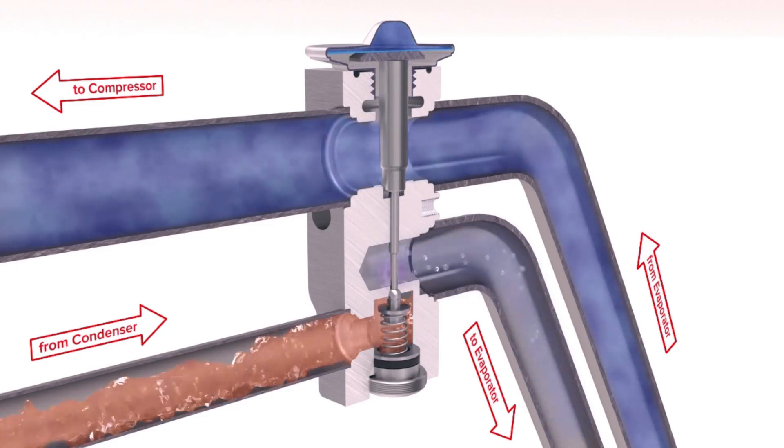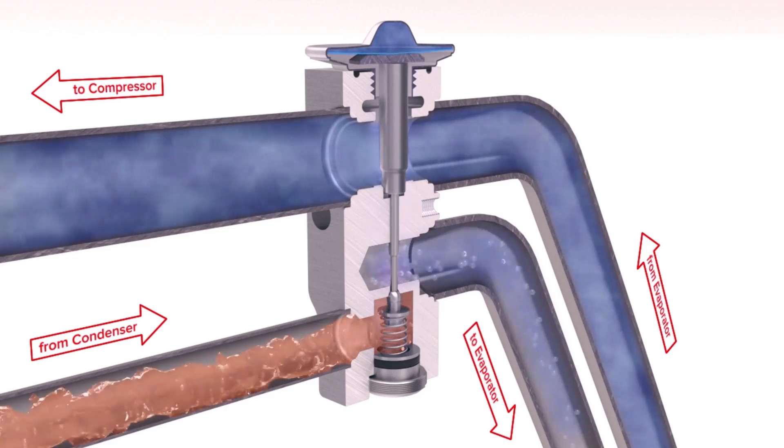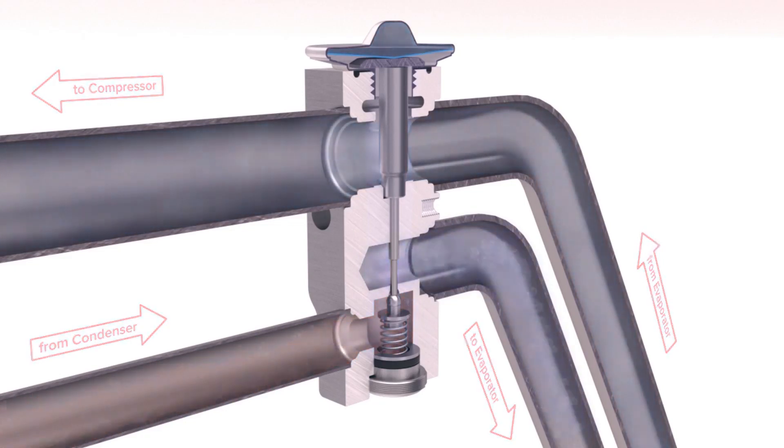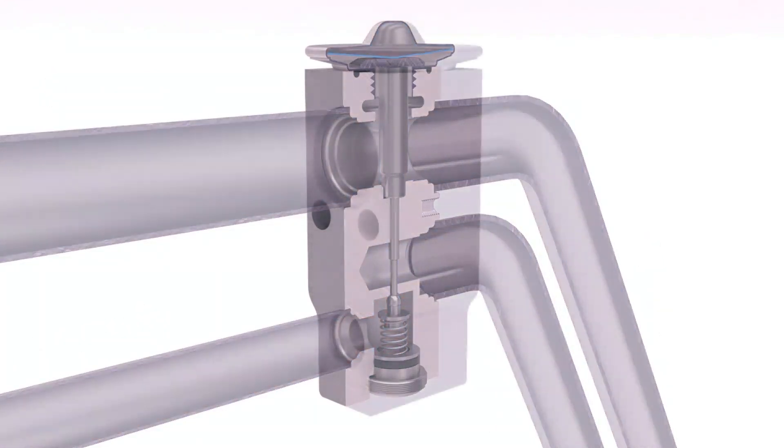The expansion valve also adjusts the quantity or flow of refrigerant passing to the evaporator. Too little or too much refrigerant results in too little or too much heat being removed from the passenger compartment.